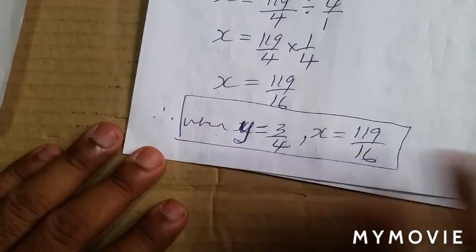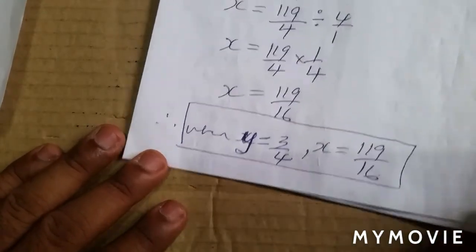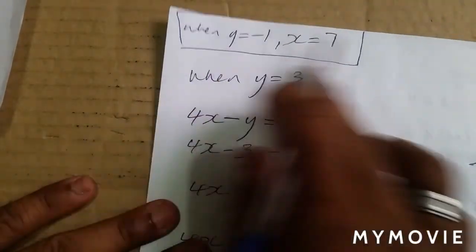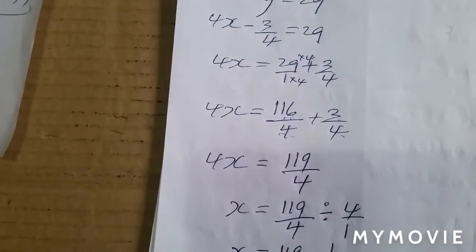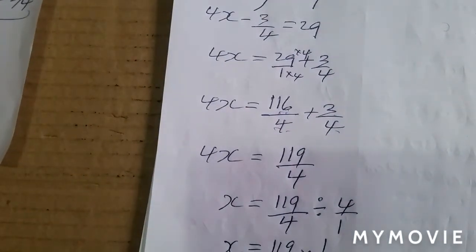So we have two pairs of answers: when y equals negative 1, x equals 7; and when y equals three quarters, x equals 119 over 16. You can verify these pairs by substituting them back into either of the original equations to check they're correct. I hope you found this video insightful and I'll see you guys in the next video.